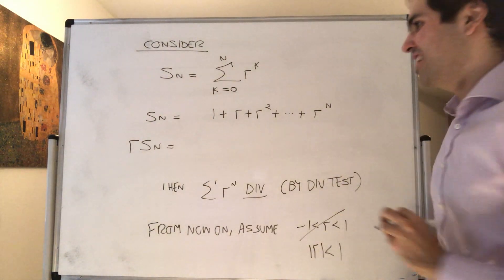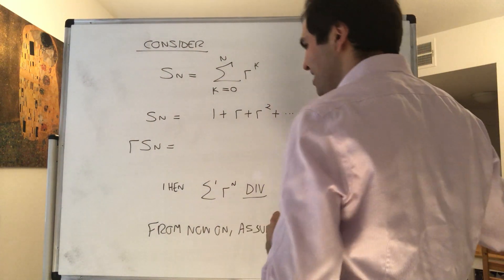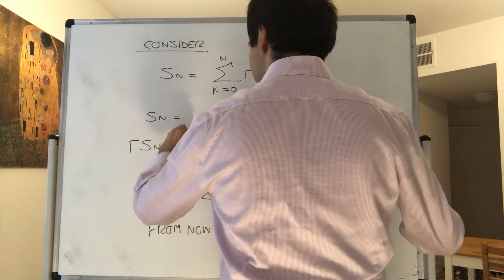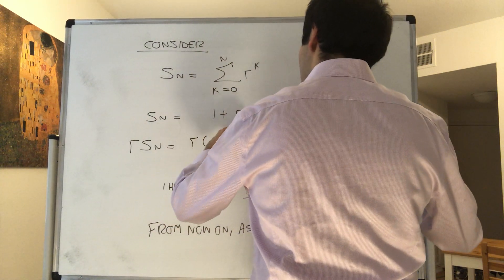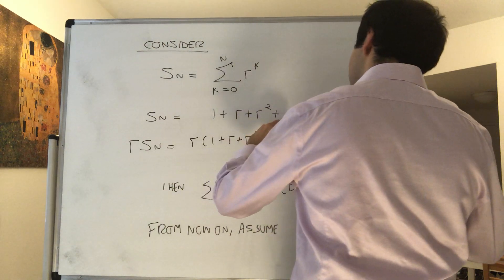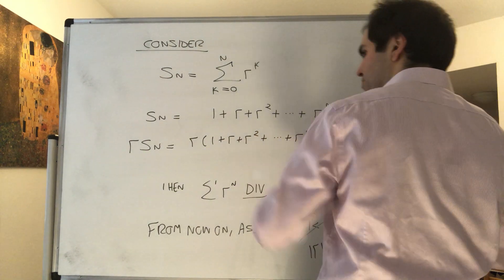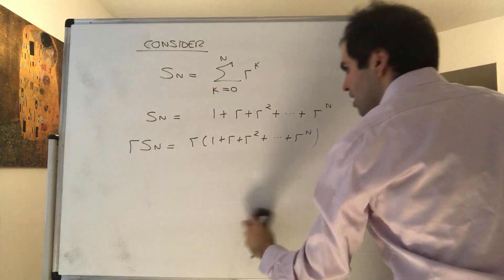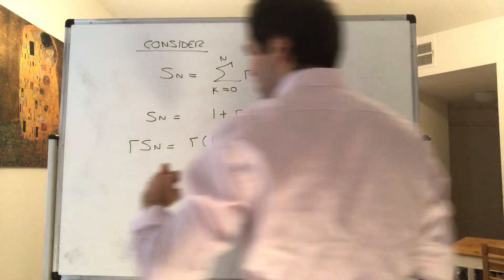So r*S_n, that's just r times 1 plus r plus r squared plus dot dot dot plus r to the n.